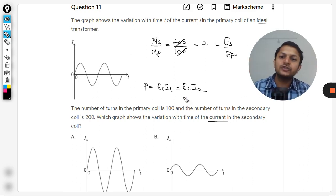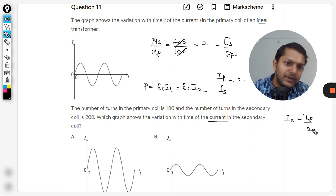You can clearly find it from this: I primary divided by I secondary is 2. So the current in secondary will be Ip divided by 2.